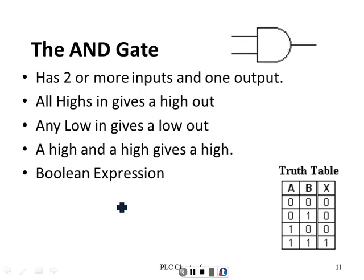Now we have an AND gate. One thing about the inverter: it always has one input and one output. An AND gate can have two inputs or more — I could have a 12-leg AND gate. I've seen them with eight legs. It has two or more inputs because you can't AND things together if you don't have more than one, but it only has one output, never two.